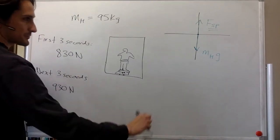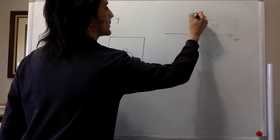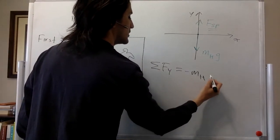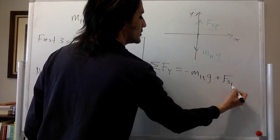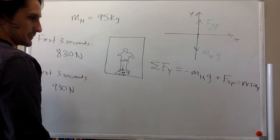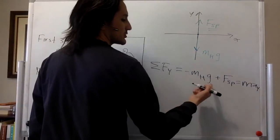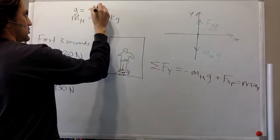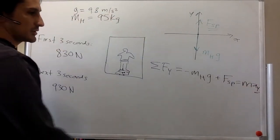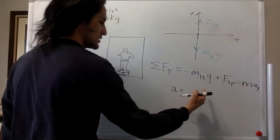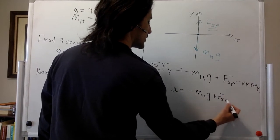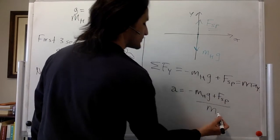In the horizontal direction, we don't have anything to worry about. So the sum of forces in Y is: negative weight plus the force of the spring, and that equals mass times acceleration in Y. We know the mass, and this is just the acceleration due to gravity — 9.8 meters per second squared — so we can get the acceleration in the Y direction.